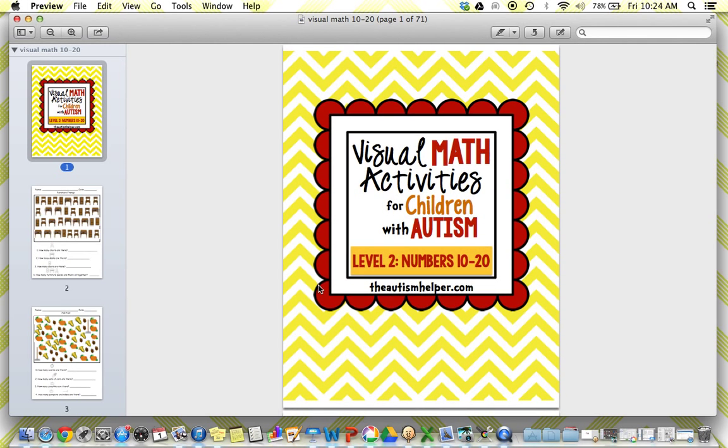So again, this is a product preview of visual math activities level two with numbers 10 through 20 at autismhelper.com.